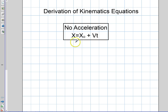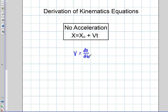But the question is, where does that come from? I'm going to start out here with a very basic application of calculus, which is basically telling you that the velocity as a function of time is equal to the rate of change of the position function over time, or the first derivative of the position function with respect to time.